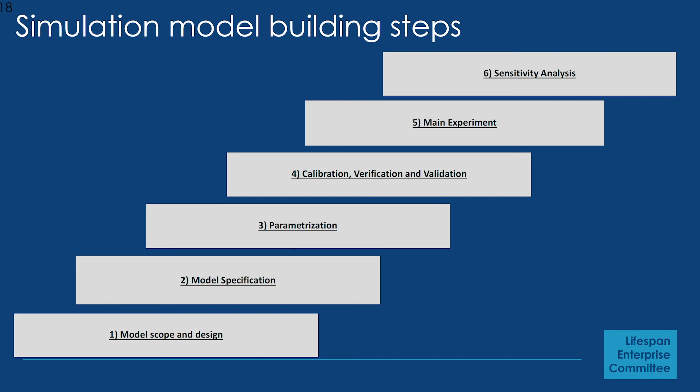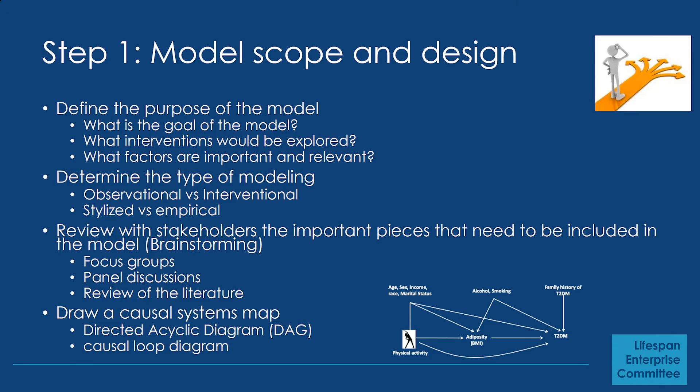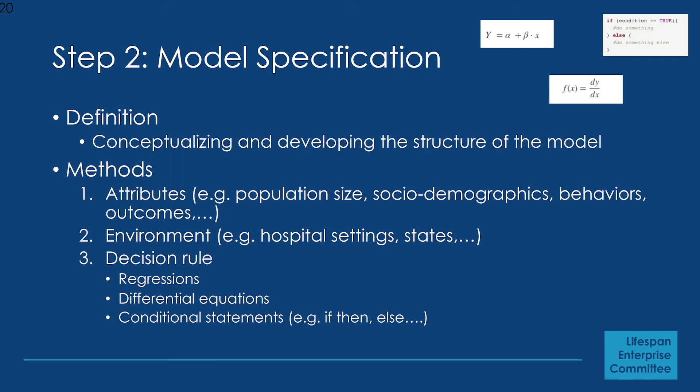The first step is to define the model scope and design it. You need to be clear about the purpose of the model — what is the goal, what interventions do you want to explore, and what factors are important and relevant. You want to do this in a manner that involves all stakeholders through focus groups and panel discussions so that everyone is part of the decision-making process. Then you can draw a causal diagram or a directed acyclic graph to incorporate all the ideas discussed.